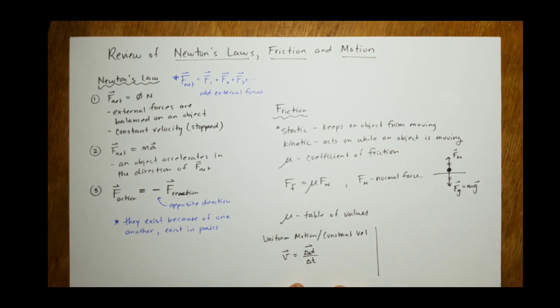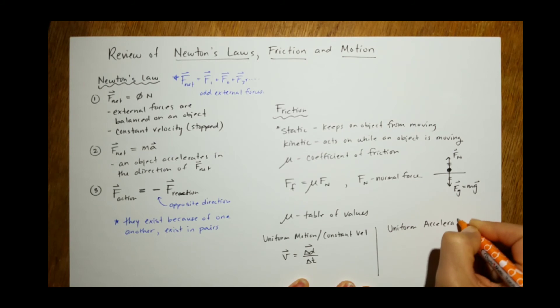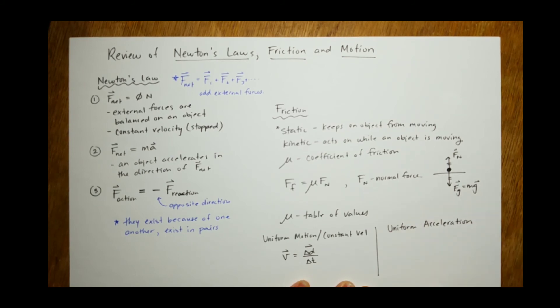Uniform motion slash constant velocity is velocity equals displacement over time. And then, the other equations are for uniform acceleration. They're on your formula sheet.